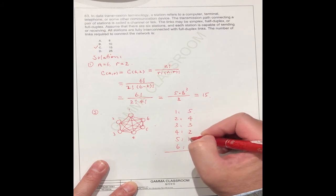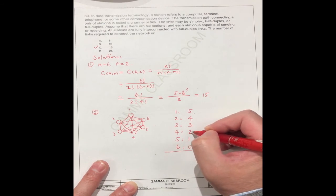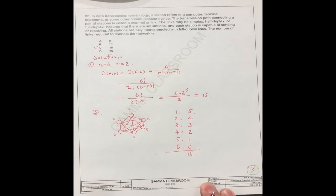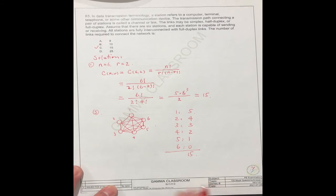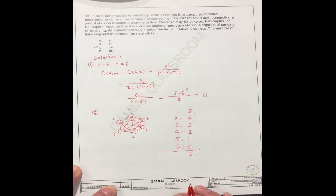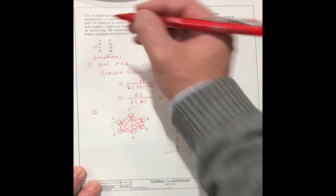So putting it together, 5 plus 4 is 9, plus 3 is 12, plus 2 is 14, plus 1 is 15. So the answer is the same, but this way takes a long time. Using the formula is fast, you can save time. So the correct answer should be C.